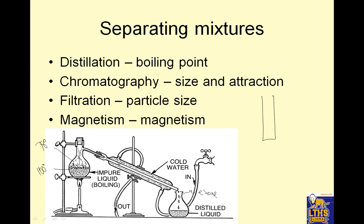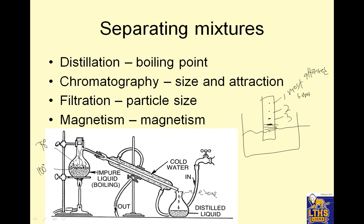Chromatography: you've got a solvent and your mixture on paper. The paper pulls the solvent up, and it starts creeping up. As it does, the different components separate into different layers — component one, two, three. The components most attracted to the solvent and smallest in particle size travel highest, and the least attracted or biggest travel the least distance.